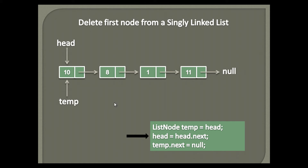Step 2 traverses the head node to its next. In order to delete the first node from the linked list, we need to remove the head node's reference to it.